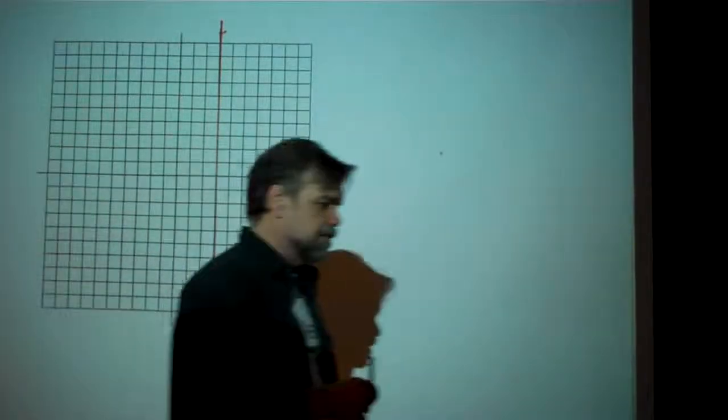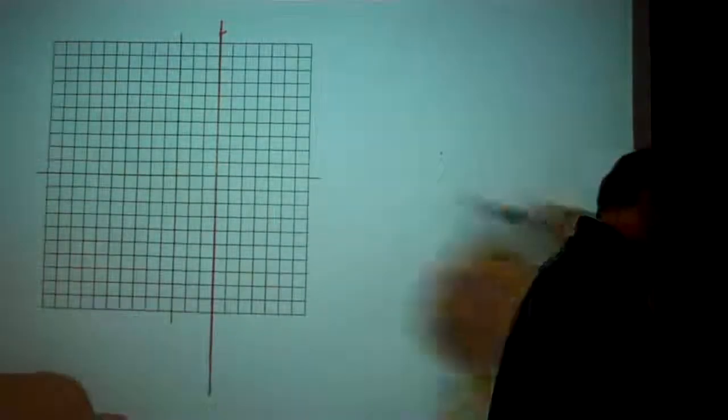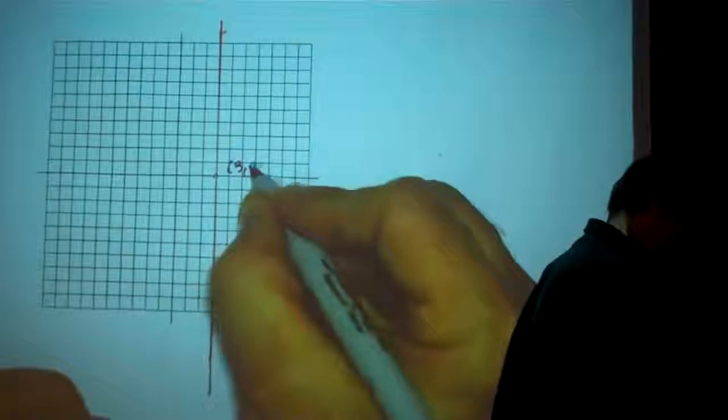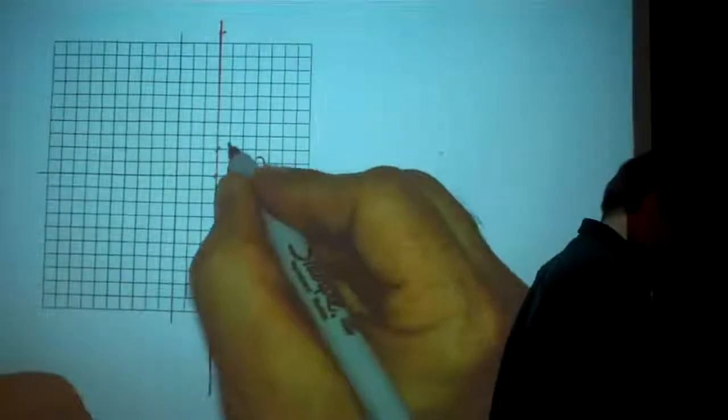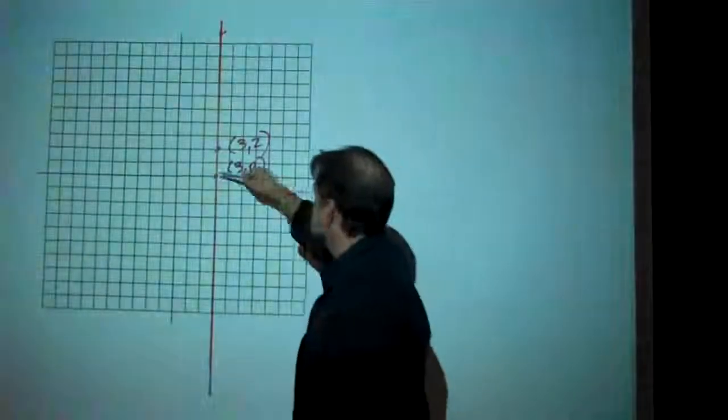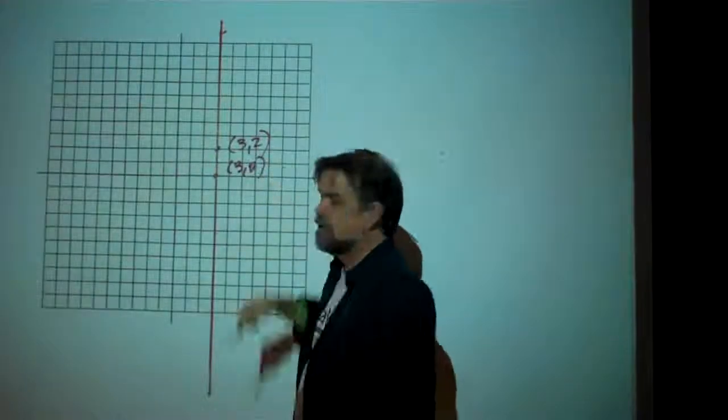So what can we do instead? Well, let's look at the slope. Let's say we're going to go from this point right here, the point (3,0), to the point (3,2). These are two points that are on my line, (3,0) and (3,2).